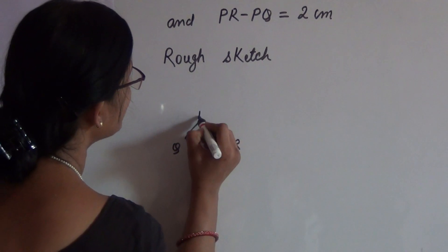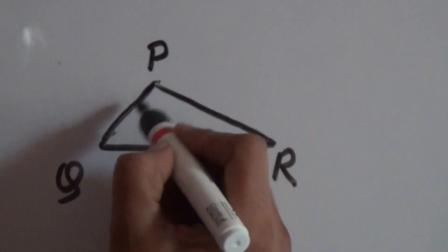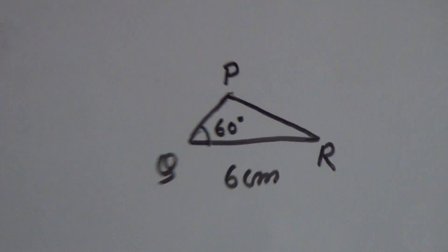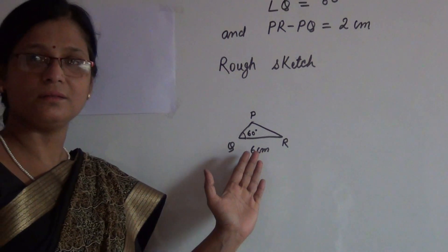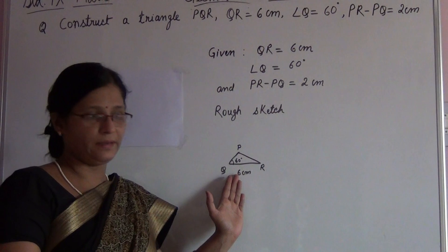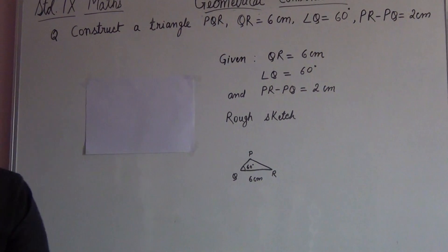So it is very important to decide which one is longer, which one is shorter. Here it is 60 degrees. So I anticipate that the actual triangle will be similar to this which we have drawn here. Let us start the actual construction.